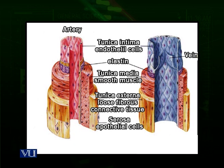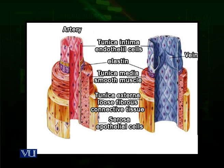The elastic layer and muscles are required in greater quantities in arteries to contract, relax, and handle pressure changes. The outermost layer is also thicker in arteries but thinner in veins. Arteries have to face higher pressures and withstand them, so they have a thicker connective tissue layer to protect them from bursting. In veins there is no such problem, so they are thinner in comparison.